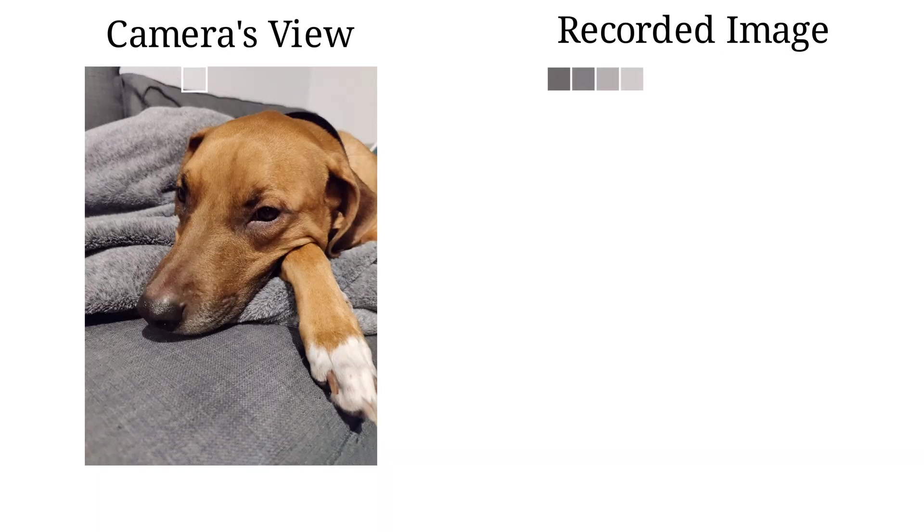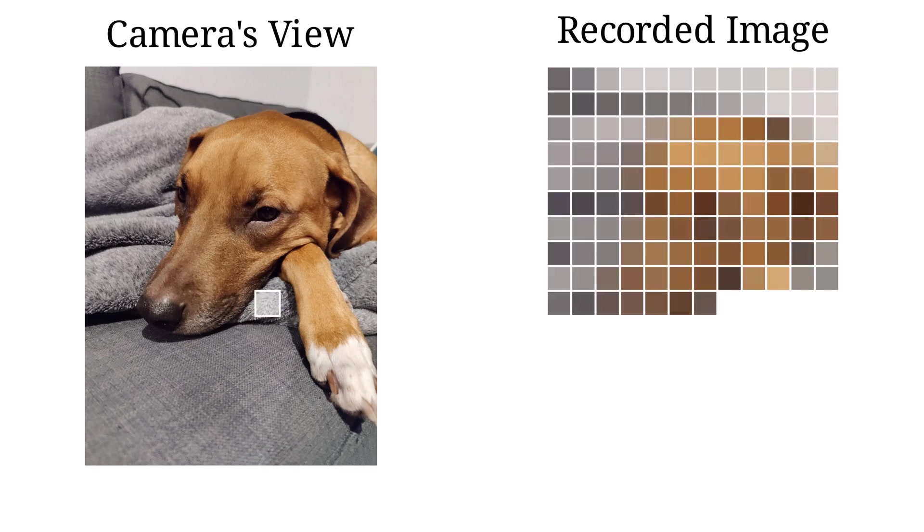If that's how a camera works, how do you take a photo with one pixel? By moving a single pixel around and taking the measurements one at a time, we can create the same effect as a full camera sensor. Sure, it'll be slower than a normal camera, but it'll still work.